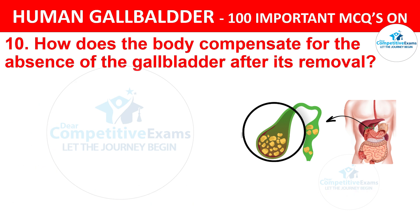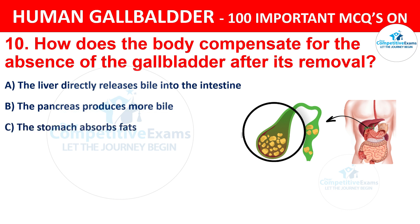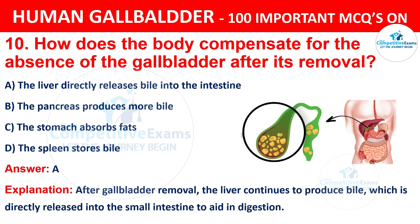Question 10: How does the body compensate for the absence of the gallbladder after its removal? Options are: A) The liver directly releases bile into the intestine, B) The pancreas produces more bile, C) The stomach absorbs fats, D) The spleen stores bile. The correct answer is A. After gallbladder removal, the liver continues to produce bile, which is directly released into the small intestine to aid in digestion.